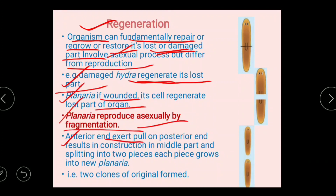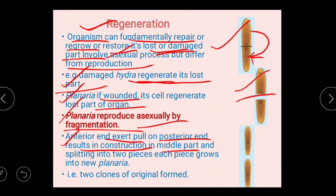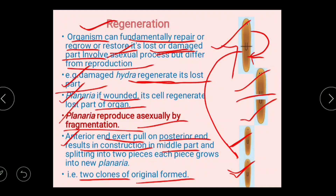In Planaria, the anterior end exerts a pull on the posterior end, resulting in constriction in the middle part. The anterior and posterior parts split into two pieces. These two pieces grow into new planaria, and these two are clones of the original form, developing into new individuals.